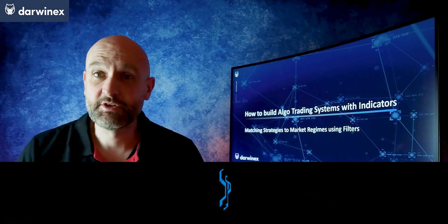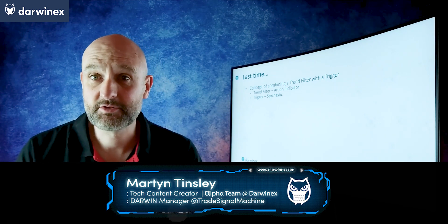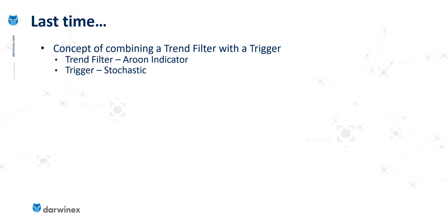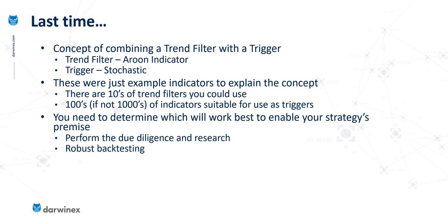Last time we looked at the concept of combining a trend filter with a trigger. The example indicators we used were the Aroon indicator for the trend filter and the simple stochastic indicator for the trigger. But of course these were just example indicators to explain the concept. In actual fact you could have chosen any number of indicators — I'm aware of probably at least 10 that can be used as trend filters, and there are hundreds if not thousands of indicators available for a trigger. You will need to decide which best meets the need of serving the premise of your own strategy.